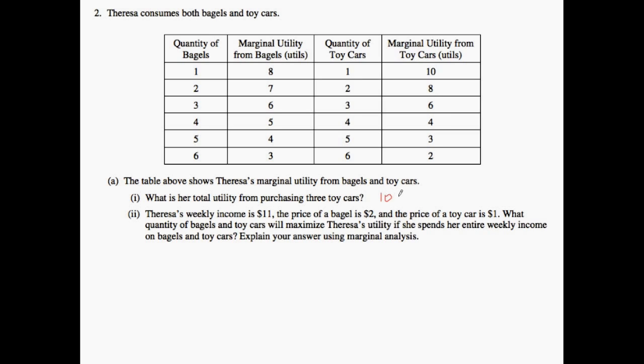Essentially we need to sum the amount of marginal utility she gains from each successive unit of toy car that she purchases and therefore we have 10 plus 8 plus 6 which is going to equal 24. The second thing that we need to think about is that she has a weekly income and the price per bagel is two dollars and the price of her toy car is a dollar. So what quantity of bagels and toy cars will maximize her utility if she spends her entire weekly income on these two goods? We need to explain our answer using marginal analysis. Marginal analysis is essentially where you want to use the marginal utility to price ratio or the MUP to P ratio.